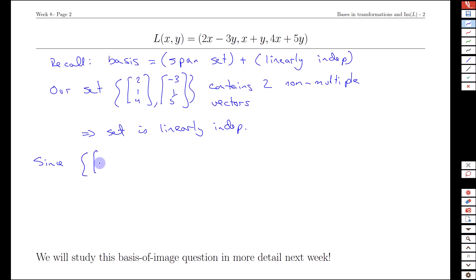Since the set {[2, 1, 4], [-3, 1, 5]} is a spanning set for the image of L, and it is also linearly independent, that implies this set is a basis. A basis for what? For the image of L.